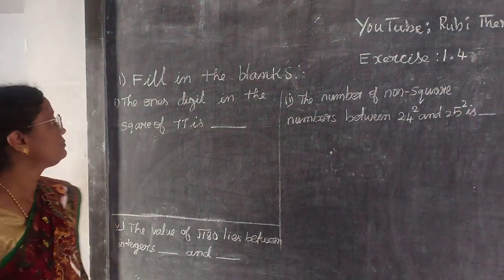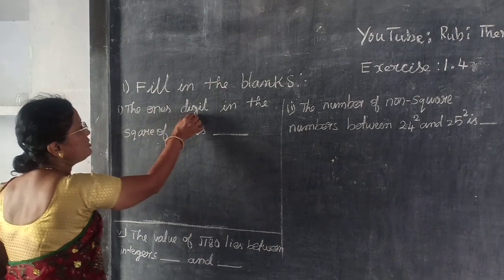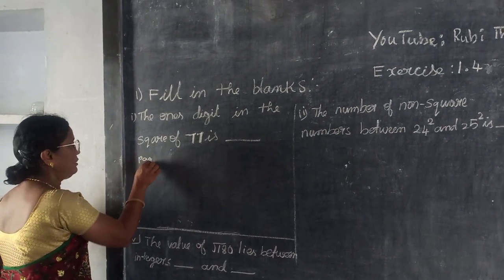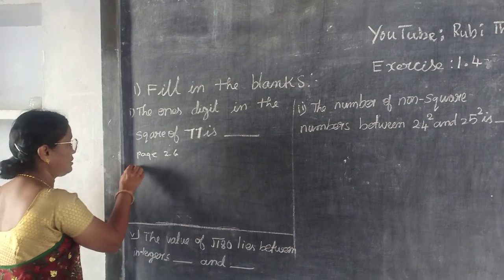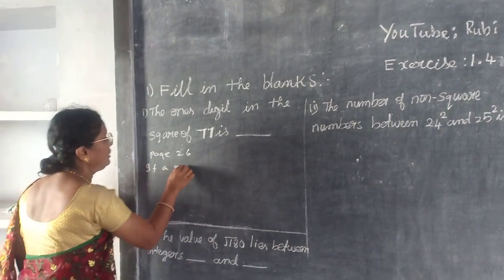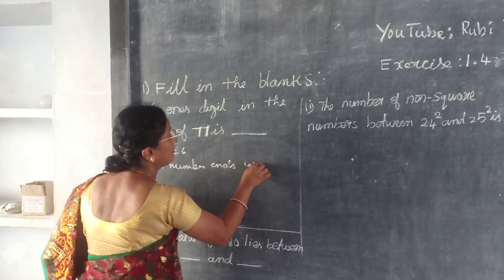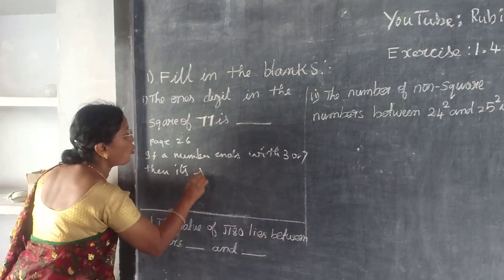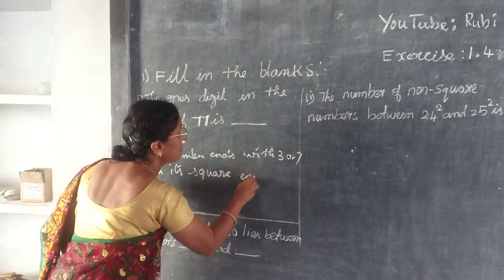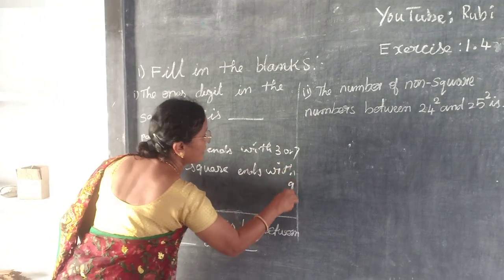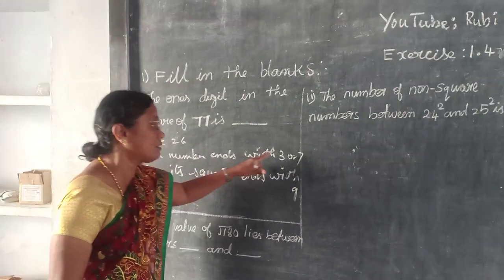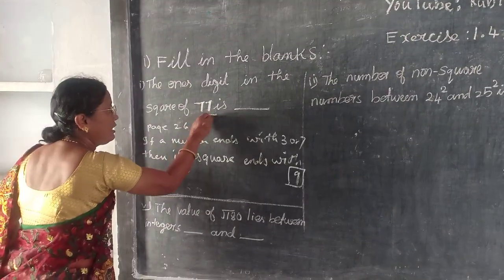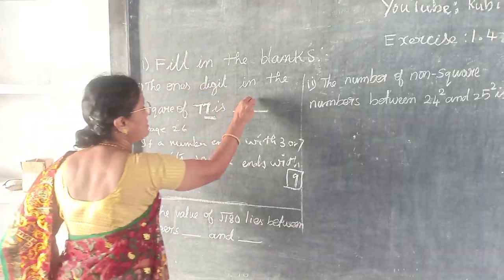Good morning children, listen here. The units digit in the square of 77 — see that. If your number ends with 3 or 7, then its square ends with 9. If your number ends with 3 or 7, then its square ends with 9. Seven sevenths are 49, it ends with 7, so the units digit is 9.